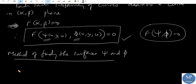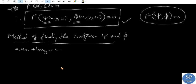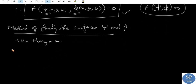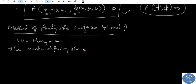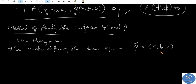Now, we have the given differential equation A u_x + B u_y = C. The characteristic equations are given by dx/dt = a, dy/dt = b, and du/dt = c. The vector defining the characteristic equations, let it be p = (a, b, c), so we have dx/dt = a, dy/dt = b, du/dt = c.